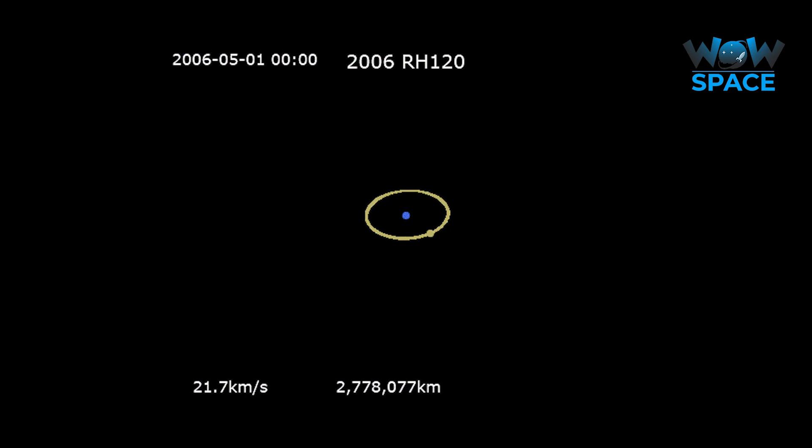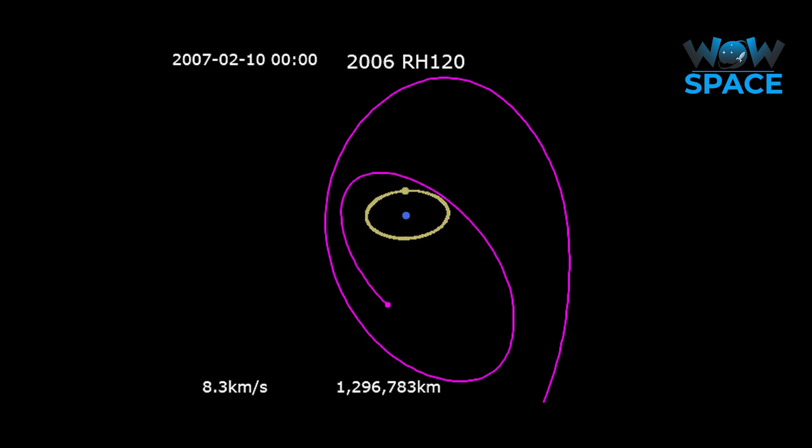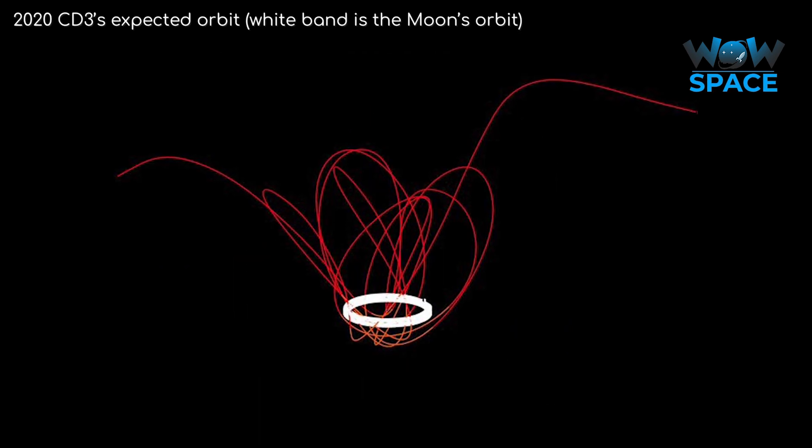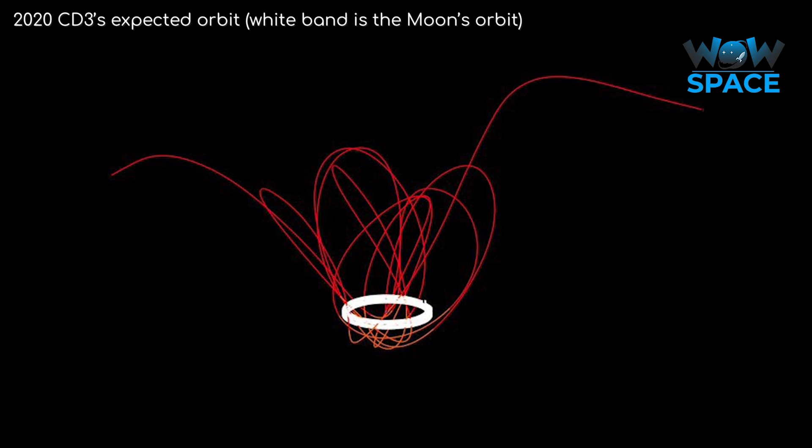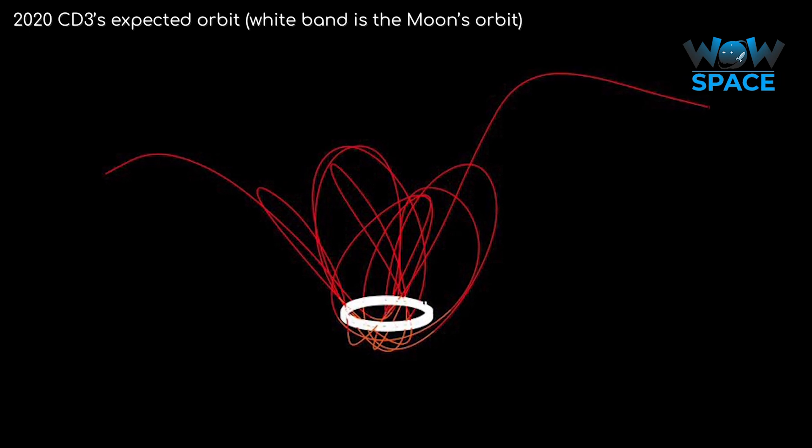A very similar thing happened in 2006 with an asteroid called 2006 RH120, where Earth had a second moon for just short of a year, before again it was ejected. And just like back then, once this one leaves Earth's orbit, we'll be back to just the one natural satellite.